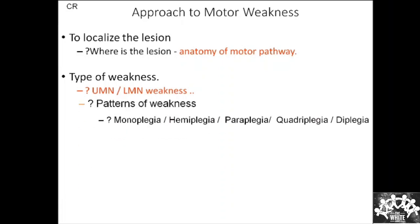You need to find out the pattern of weakness: if only one limb is involved, it is called monoplegia. One side upper and lower limb is hemiplegia. Two lower limbs is paraplegia. All four is quadriplegia. Diplegia involves two upper limbs, and so on. In this case, it is one-sided weakness — hemiplegia or hemiparesis. Plegia means total weakness; paresis means partial weakness.